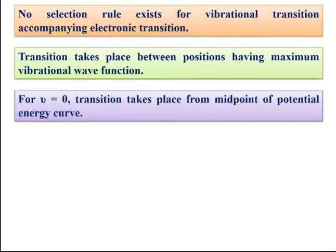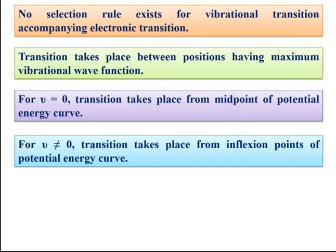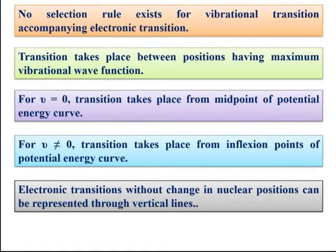If vibrational energy level v = 0, transition takes place from the midpoint of the potential energy curve, because the wave function is maximum at the midpoint for vibrational level zero. For higher vibrational levels, transition takes place from the turning points of the curve. Electronic transitions without change in nuclear position can be represented through vertical lines and are known as vertical transitions.